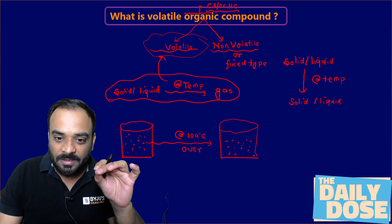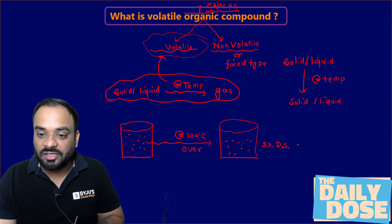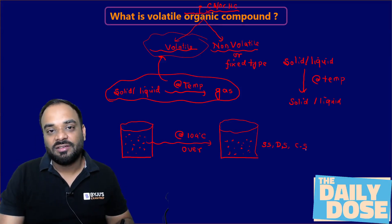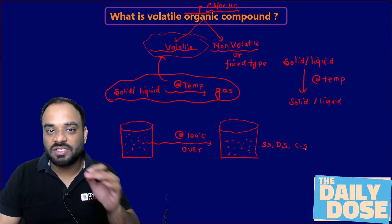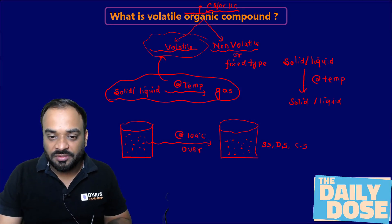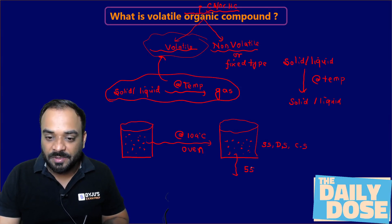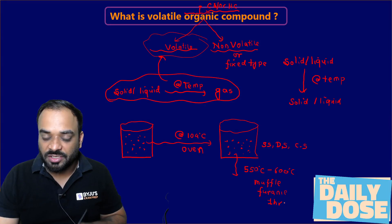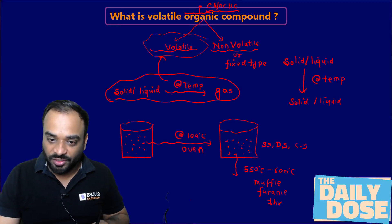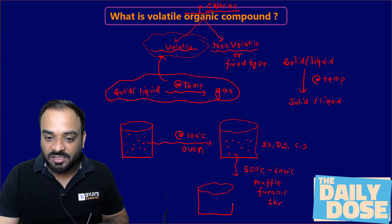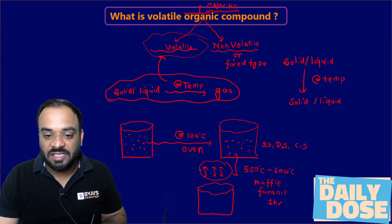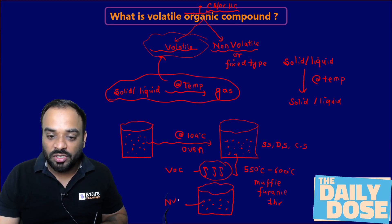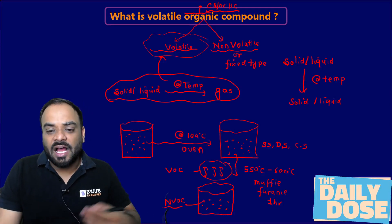That remaining solid represents the concentration of suspended solid, dissolved solid, and colloidal solid. Now we need to measure how much concentration is volatile in nature and how much is non-volatile. Take this already-heated sample and place it into the muffled furnace at a temperature of 550 to 600 degrees centigrade for one hour duration. Whatever volatile organic compound is there will get evaporated — converting itself into gas — and the remaining part is non-volatile organic compound.